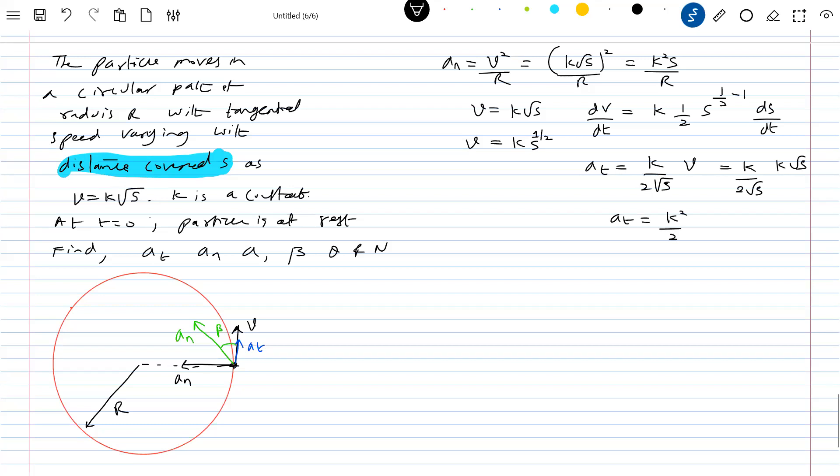I want you to really make observation here. What is the tangential acceleration? Is it constant or variable? It's a constant. What about normal acceleration? It varies. Look at the normal acceleration. It varies with the distance covered. But tangential acceleration, it's a constant. It will not change.